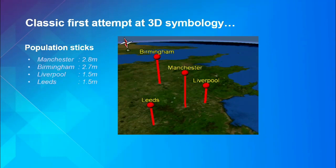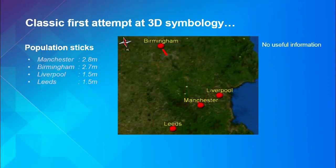What happens when you try to make a 3D map? The first thing people do is something like this — I call these population sticks. We've got Manchester, Birmingham, Liverpool, and Leeds, with population shown by extrusion. The size of the stick tells you how many people live there; where it touches the ground tells you where the city is. That's not bad from one viewpoint, but in 3D you can just move the viewpoint. If you come above and look straight down, you've got no useful information at all.